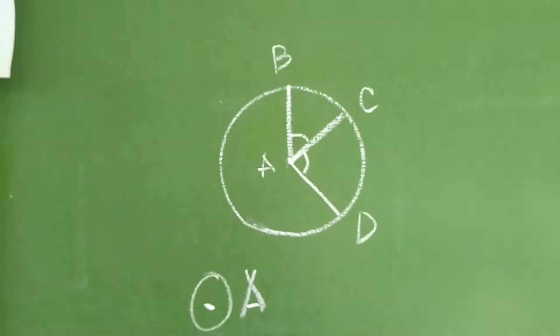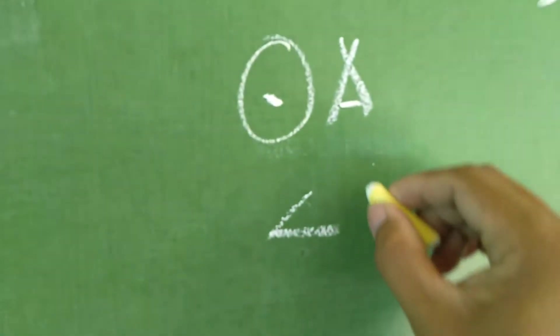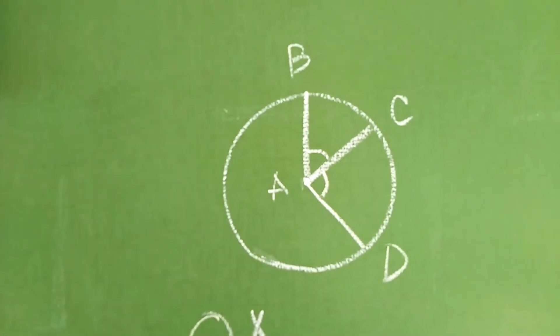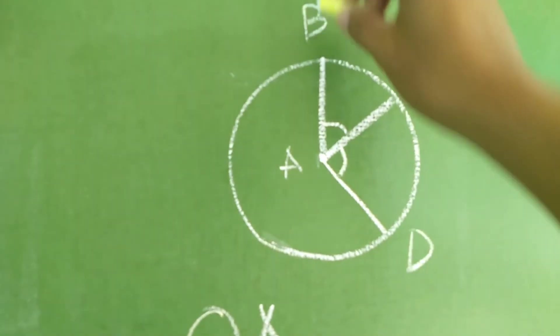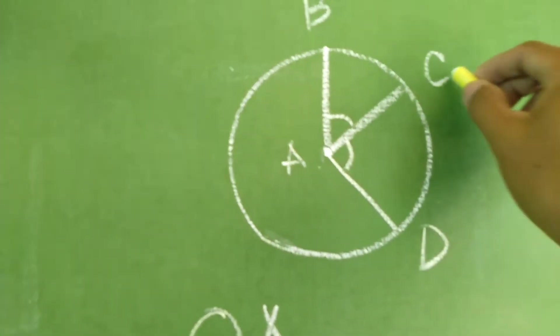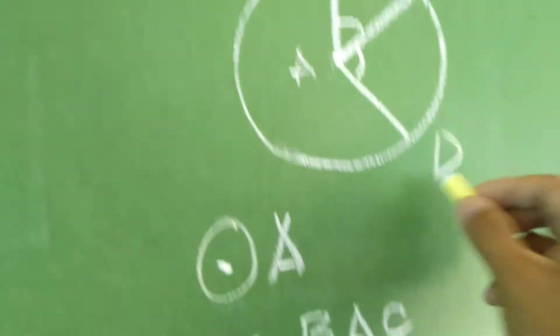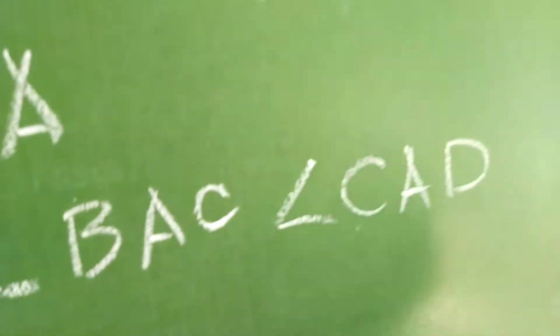Meron na po tayo dito ngayon, dalawang Central Angle. Okay, ang Central Angle natin is angle B, A, C. Actually, naging 3 na ang ating Central Angle. Okay, so B, A, and C. Ang pangalawa naman po is C, A, D. Again, I repeat. C, A, D. So, Angle C, A, and D.